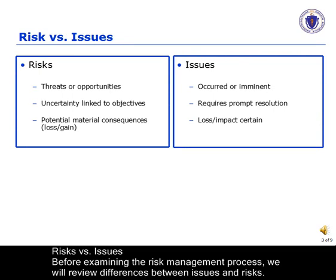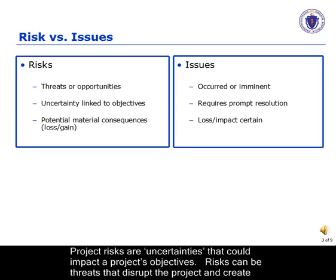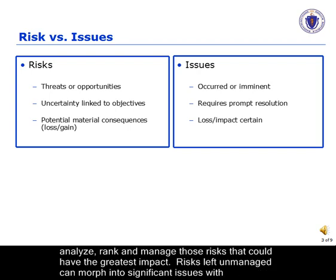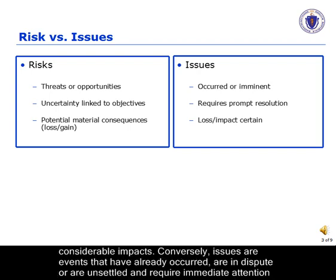Risks vs. Issues. Before examining the risk management process, we will review differences between issues and risks. Project risks are uncertainties that could impact a project's objectives. Risks can be threats that disrupt the project and create losses, or opportunities that benefit the project. If the project's objectives are not clearly defined, it will be difficult to identify, analyze, rank, and manage those risks that could have the greatest impact. Risks left unmanaged can morph into significant issues with considerable impacts. Conversely, issues are events that have already occurred, are in dispute, or are unsettled and require immediate attention and resolution.